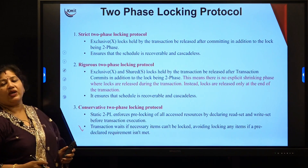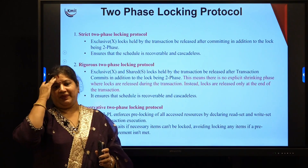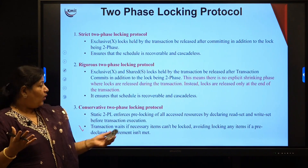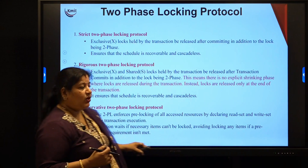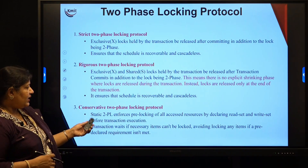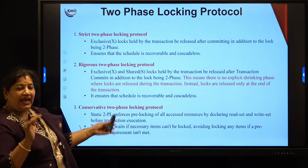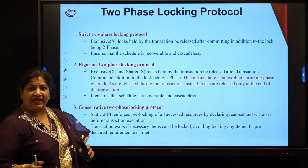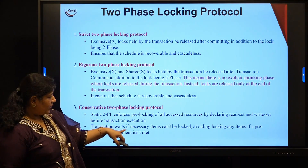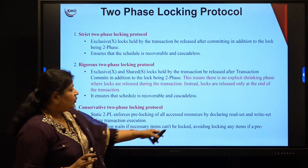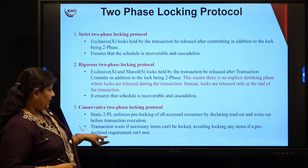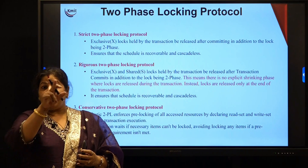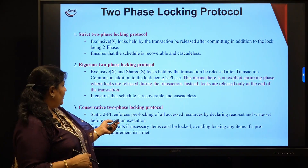In conservative two-phase locking protocol, before you start — similar to deadlock avoidance in operating systems — you declare a read set and a write set before the transaction execution, and it enforces pre-locking of all accessed resources. If everything is not available, the transaction will wait; it postpones its beginning until all required locks can be acquired. This avoids locking any item if the pre-declared requirement is not met. If the required resources are not available, it waits — which is how deadlock can be avoided.